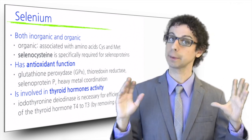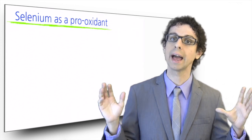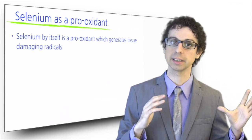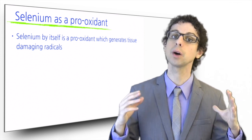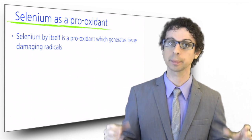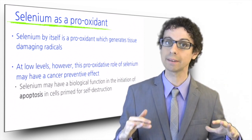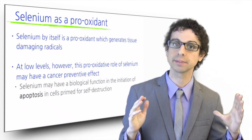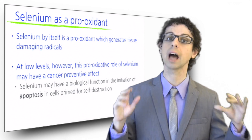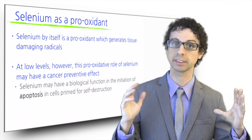On the other hand, like many other minerals we have already encountered, selenium also has a Dr. Jekyll and Mr. Hyde side. The evil side of selenium is that by itself it is a pro-oxidant mineral, which generates tissue-damaging radicals, just like iron or copper. This pro-oxidative role of selenium, however, at low levels may have a biological function in an important mechanism of cancer prevention, which is apoptosis.